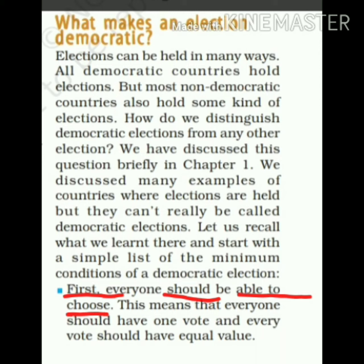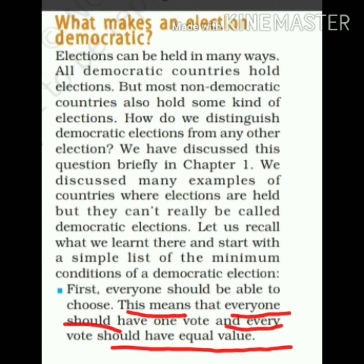Very first feature: everyone should be able to choose. हर किसी को choose करने का अधिकार हो, बिना किसी भेदभाव के। आपने universal adult franchise पढ़ा हुआ है — this means that everyone should have one vote, and every vote should have equal value. हर vote को एक गिना जाना चाहिए और हर vote की equal value हो — अमीर-गरीब का अंतर ना हो, स्त्री-पुरुष का अंतर ना हो। This is the first feature of democratic election.